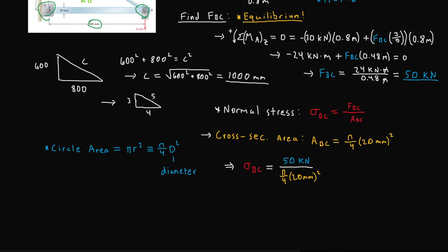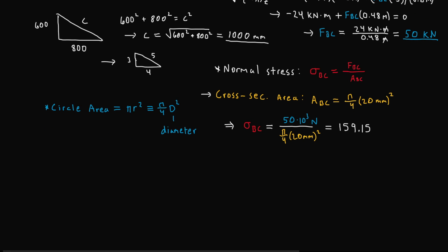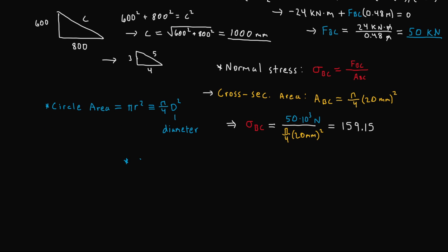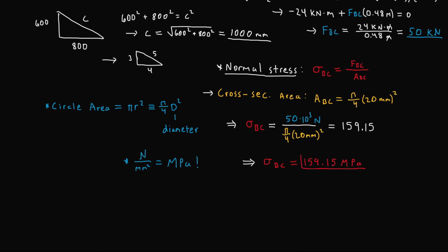Since we're using millimeters for diameter, we convert the 50 kilonewtons to newtons by multiplying by 10 to the power of 3, so that we obtain megapascals. Thus 50,000 divided by (pi over 4 times 20 squared) is roughly 159.15. Since newtons per millimeter squared equals megapascals, our normal stress sigma_BC equals approximately 159.15 megapascals. This concludes part A of the problem.